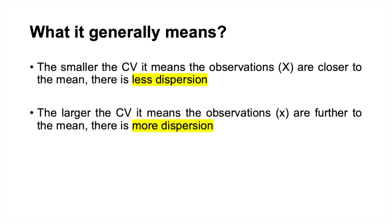For the stock price, if the changes from one day to another are large, it means there is huge fluctuation. When we calculate the coefficient of variation, the value will be large, meaning the observations are dispersed further from the mean.